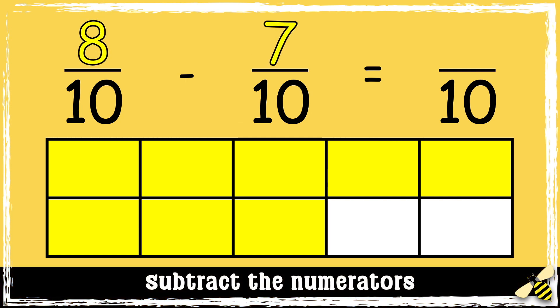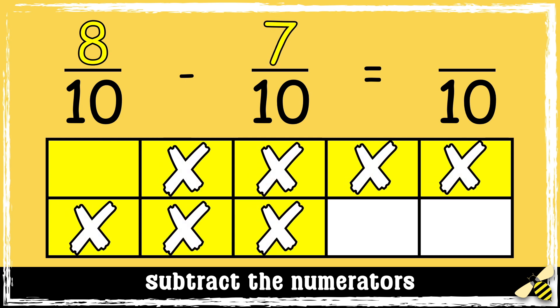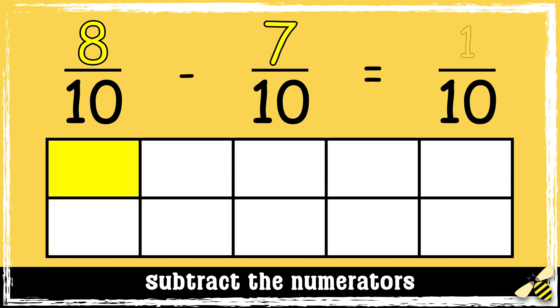8 take away 7 equals 1. So the answer is 1 tenth.